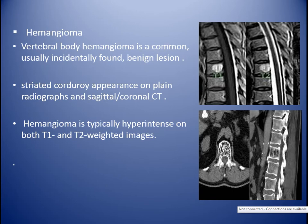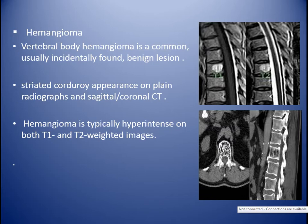Hemangioma is an extradural lesion, more common, usually an incidentally found benign lesion. It causes a striated corduroy appearance and polka dot sign on axial CT, and striated corduroy appearance on sagittal CT scan, due to resorption of some trabeculae and thickening of the remaining ones. On MRI it appears hyperintense in both T1 and T2. There is a variant that may appear hyperintense on T1 and hypointense on T2, which is difficult to differentiate from metastasis. An aggressive variant may extend into the spinal canal.